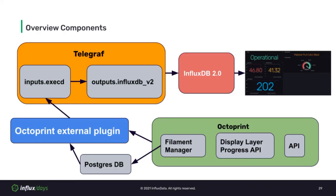Here's an overview of all the components that work together during the demo. In the blue box is the OctoPrint external plugin that gathers data from the OctoPrint API, which is in the green box, as well as from the Postgres database that the Filament Manager outputs to. The external plugin sends this data to Telegraph, represented in the orange box, where the input ExecD plugin parses the data from standard out, which then flows to the InfluxDB output plugin, configured to upload to a bucket in a local running instance of the Influx database, resulting in the dashboard you saw.